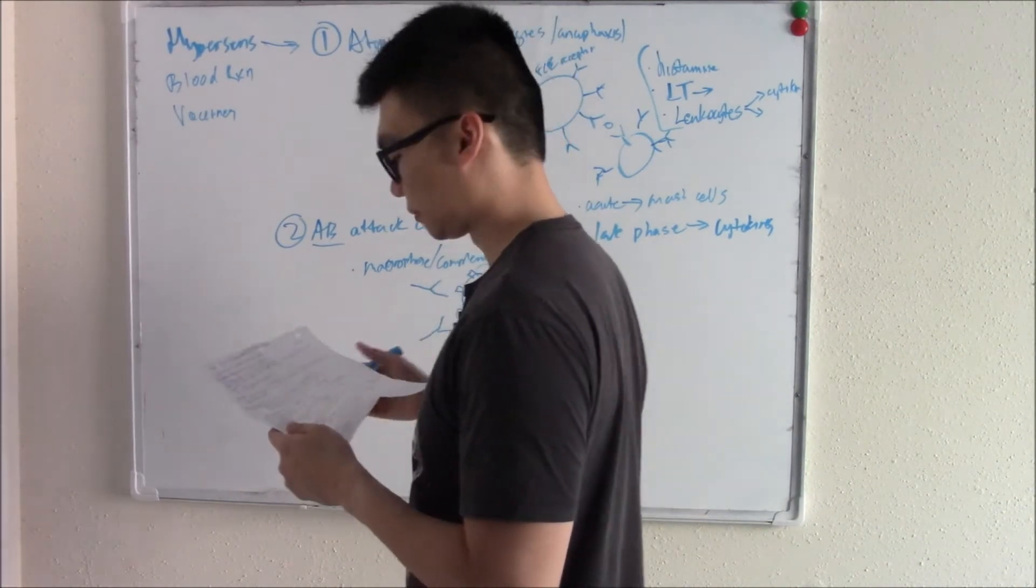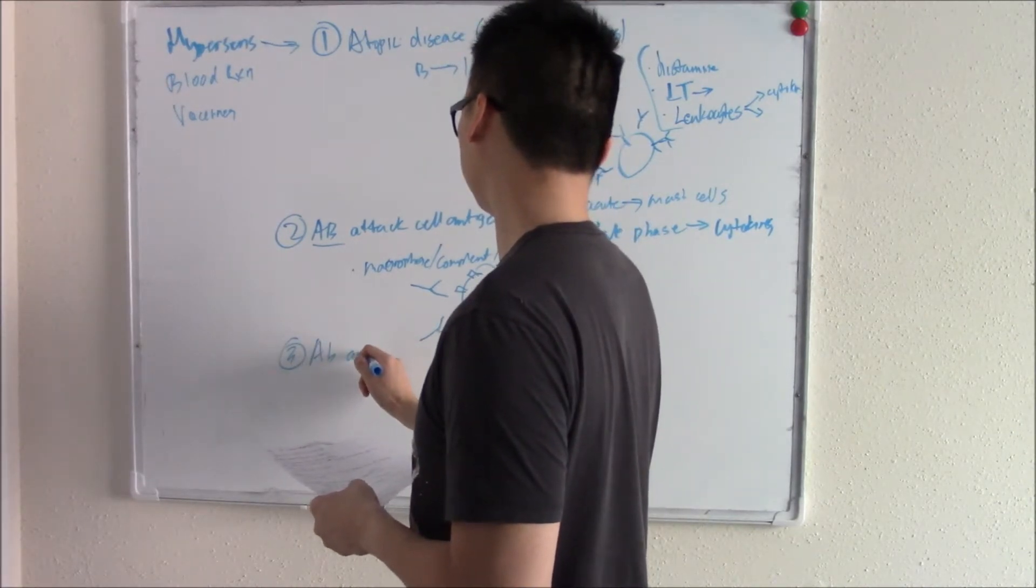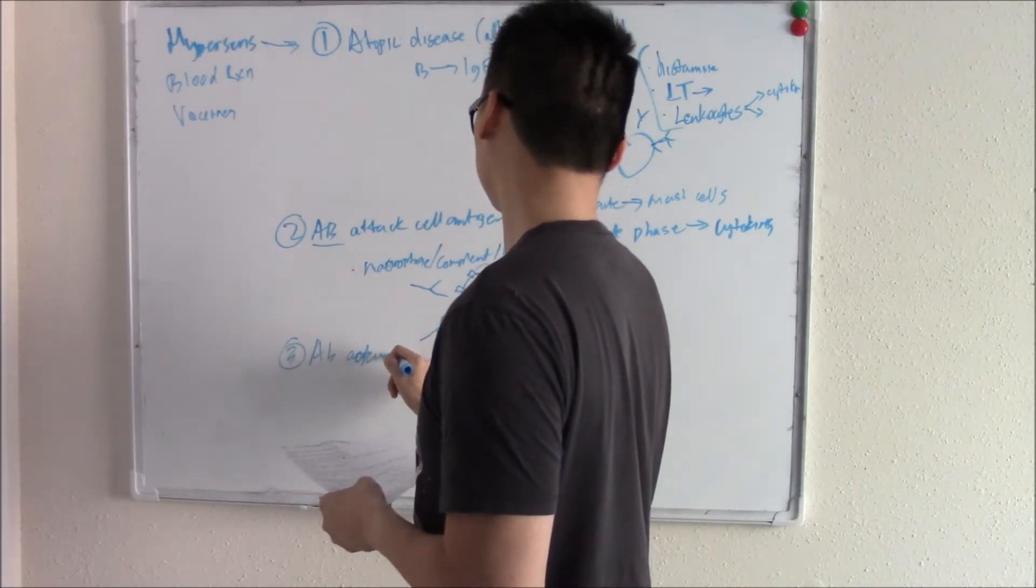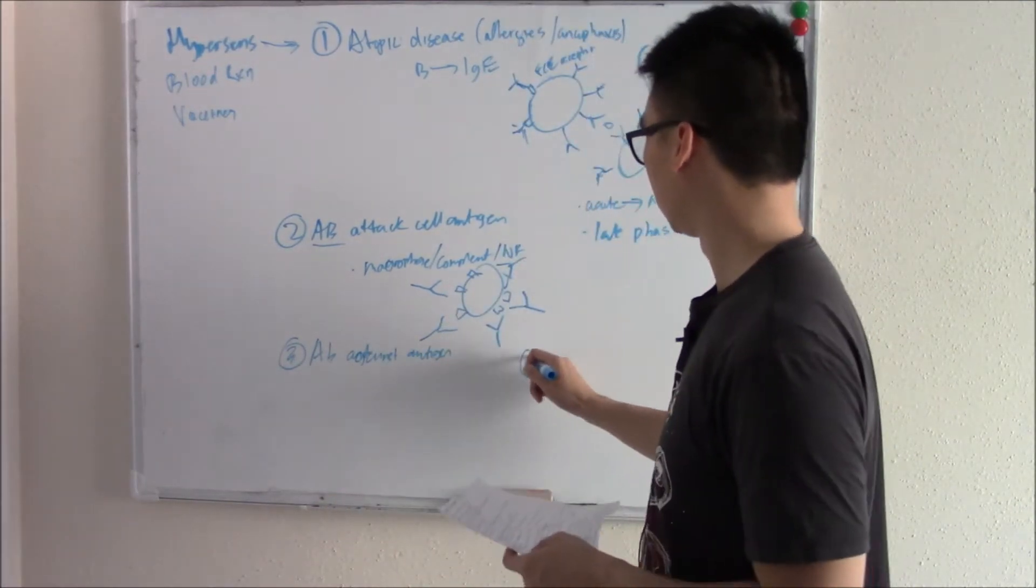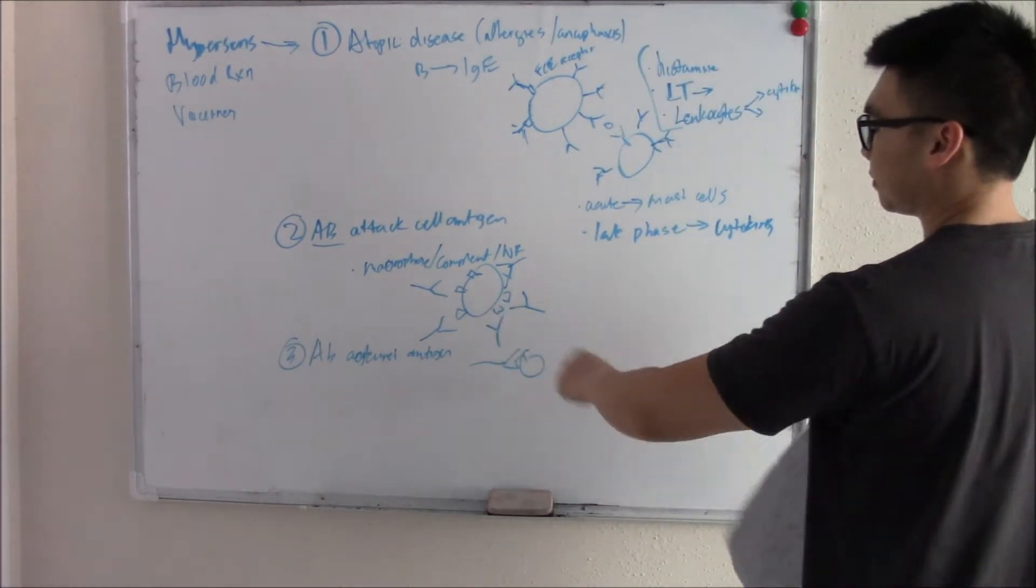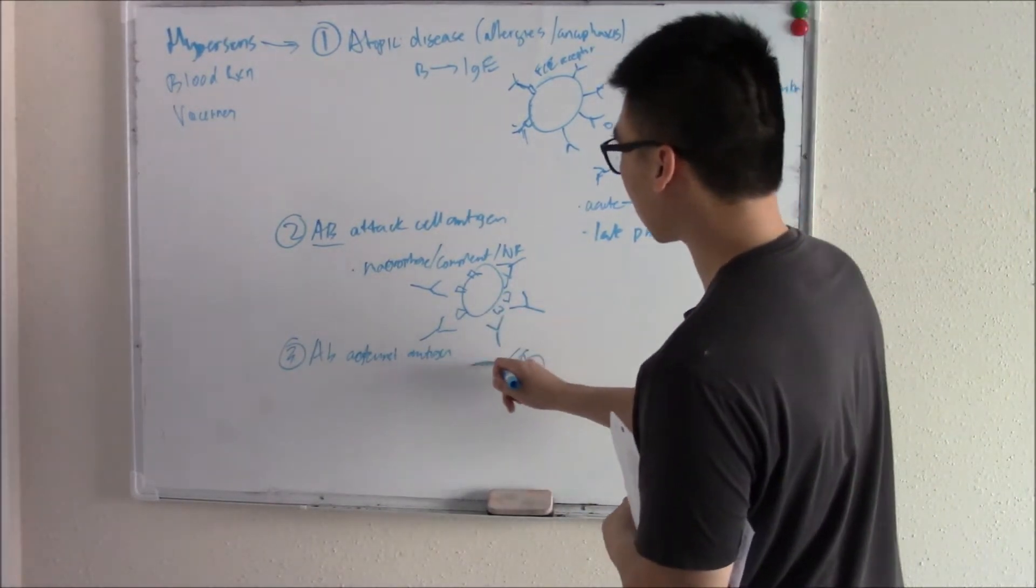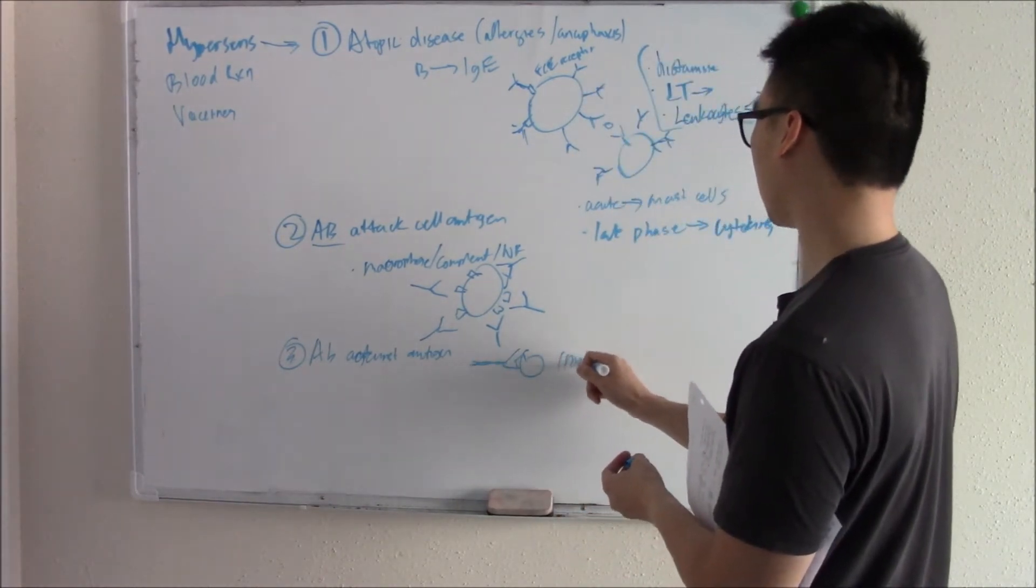Or sometimes your complement will destroy, or your natural killers will see this and destroy it. Any way you cut it, antibodies are attacking your cell antigen and it's causing destruction of whatever that is, whether it's good or bad, often exaggerated. That's type two. Type three is an antibody against an antigen. And you might be saying, what's the difference? Well, here the cell is not being attacked. Instead, it's forming this complex. We call this an immune complex.